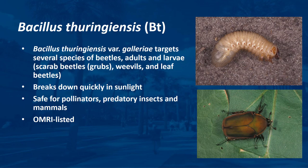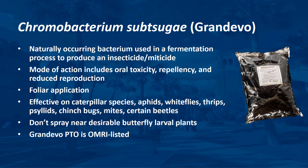Chromobacterium subtsugae is a naturally occurring bacterium used in a fermentation process that produces a product with insecticidal properties. It is a broad-spectrum bioinsecticide and miticide that controls and suppresses insect and mite pests on ornamentals and turf. It has multiple modes of action including oral toxicity, repellency, and reduced reproduction. This product is applied as a foliar application and targets numerous caterpillar species in addition to aphids, whiteflies, thrips, psyllids, chinch bugs, mites, and certain beetles. It suppresses a broad number of caterpillar species and should not be sprayed or allowed to drift in known habitats of threatened or endangered species of caterpillars and butterflies. This product may repel bees for up to 6 days, so time applications to avoid disrupting pollination.